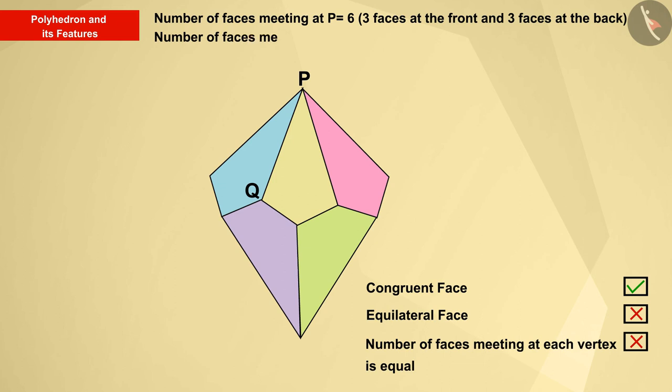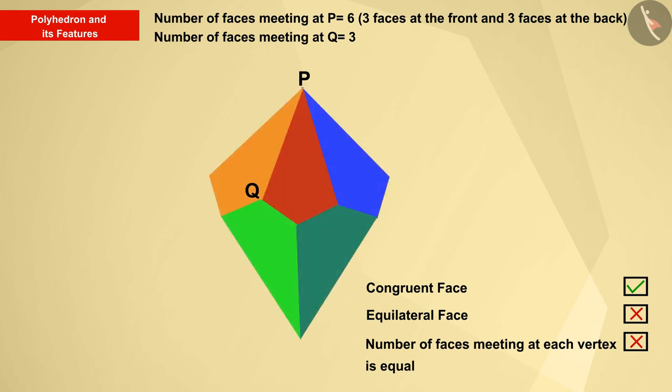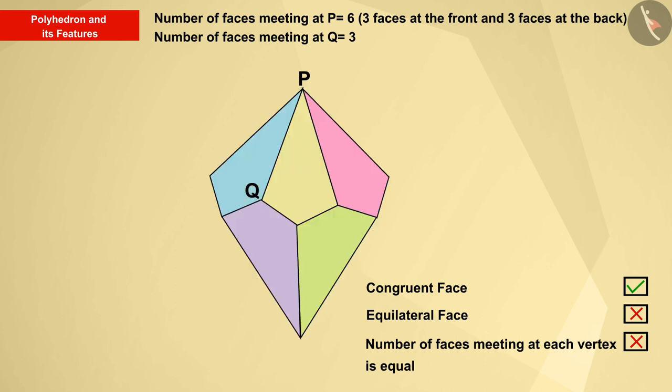The number of faces on the vertices is not equal and the faces are not congruent. Therefore this shape is not a regular polyhedron.